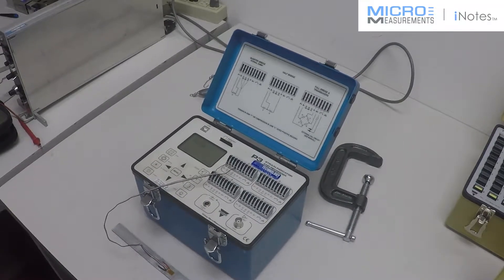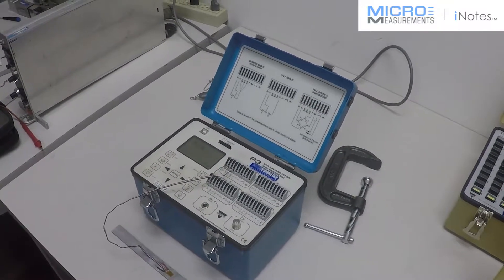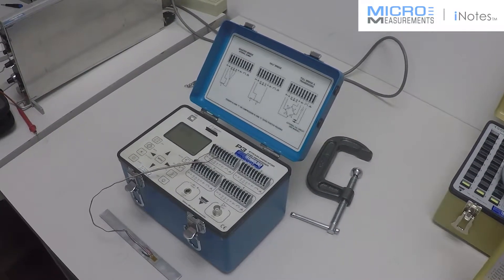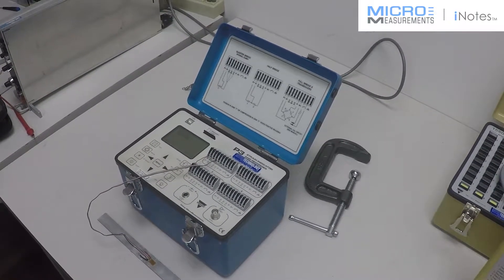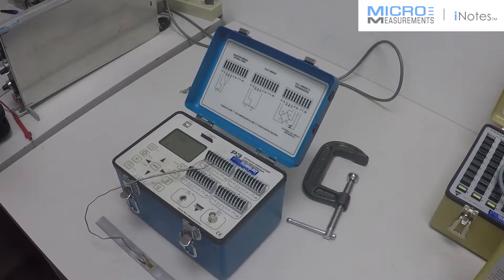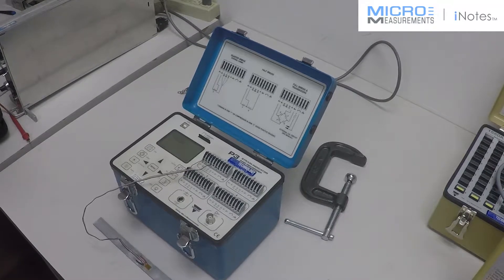It can do four simultaneous strain gauges or any four simultaneous full bridges. The P3 recorder can take 120 ohm, 350 ohm, or you can do your own bridge completion.